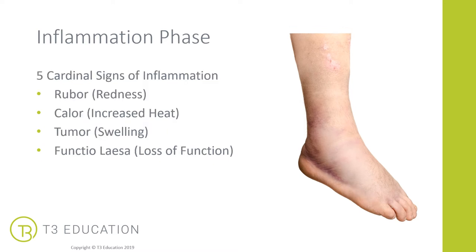Just to recap on those five cardinal signs of inflammation: Rubor, which is redness; Calor, increased heat around the area; Tumor, swelling; and functional laesa, which is loss of function. When you're working with your clients and trying to find out which phase of tissue healing they may be in, look for these signs to determine whether your client may be in the inflammation phase.